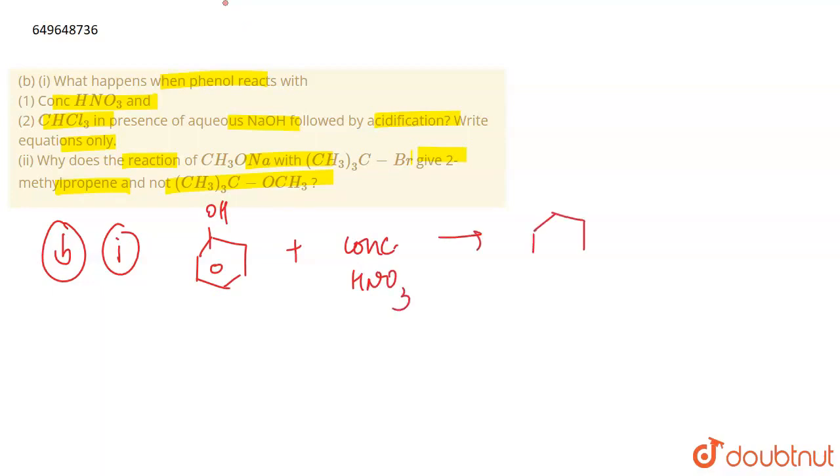The nitro group is at ortho-para positions. This is called picric acid.